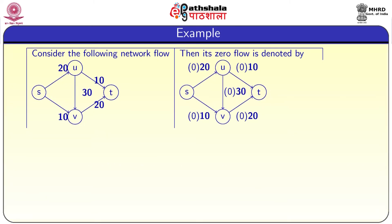We are going to illustrate all these things with an example. Consider the following network. In the first graph, it is a network with four vertices s, u, v, t — where s is the source vertex and t is the sink vertex. The in-degree of s is 0 and out-degree of t is 0. The edges are given capacities: s to u has capacity 20, u to t has capacity 10, u to v has capacity 30, s to v has capacity 10, and v to t has capacity 20.